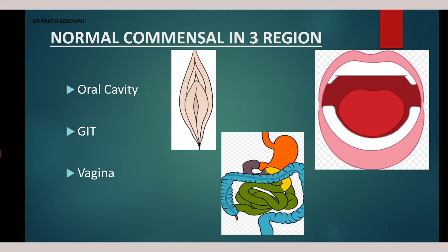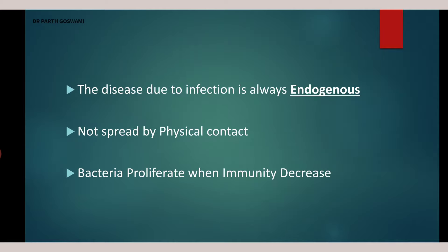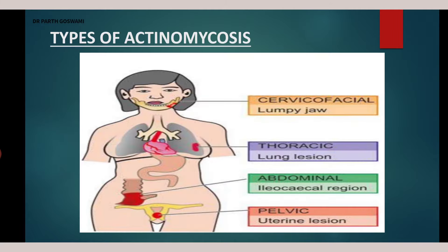This organism Actinomyces is normally present in three regions of our body as a normal commensal: the oral cavity, the gastrointestinal tract, and the vagina. Actinomycosis occurs when these bacteria proliferate — especially if your immunity is low. Because of bacterial proliferation, you will develop an abscess, which is the actinomycosis infection. It is an endogenous infection due to proliferation of normal commensals, and it does not spread by physical contact.